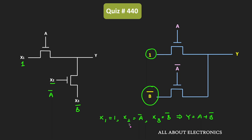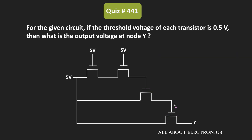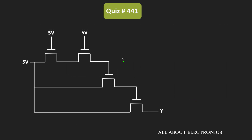Now let us move to the next example. In this question, we have been given one circuit using pass transistors, and the threshold voltage drop for each transistor is equal to 0.5V. We have been asked to find the output voltage at node Y. This pass transistor circuit is implemented using NMOS transistors, and as you know, the NMOS pass transistor passes weak logic 1, meaning while passing logic 1 there will be a threshold voltage drop across each NMOS transistor.